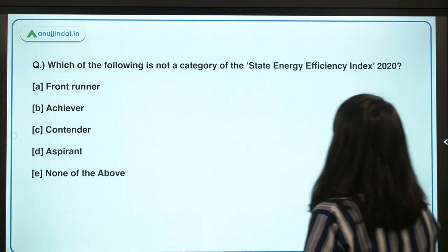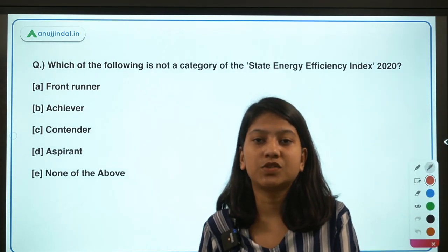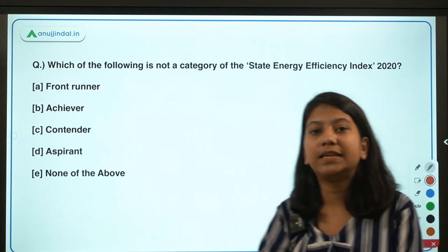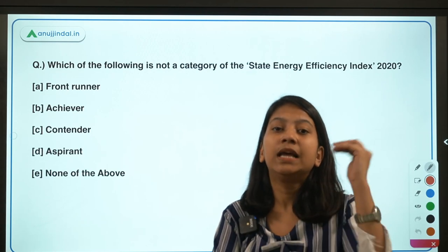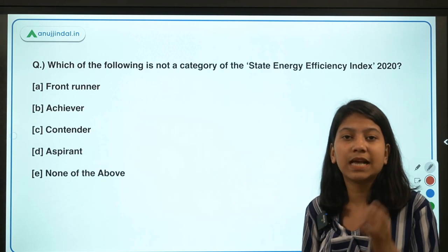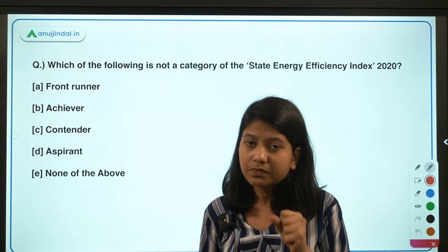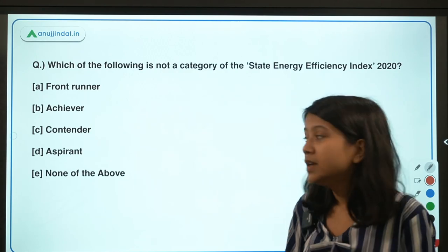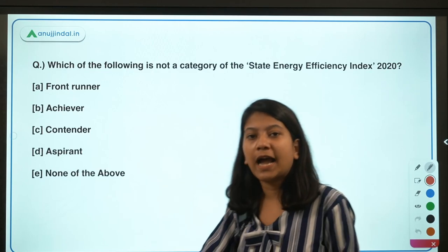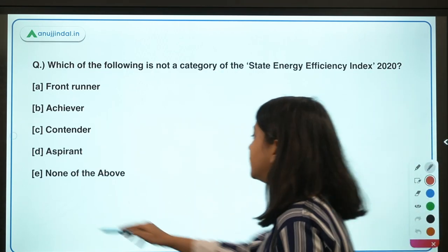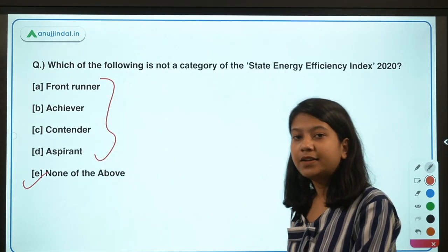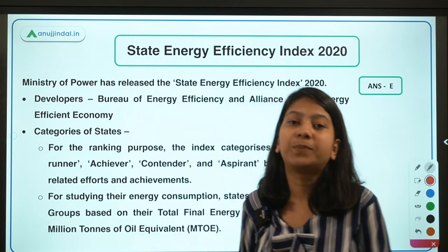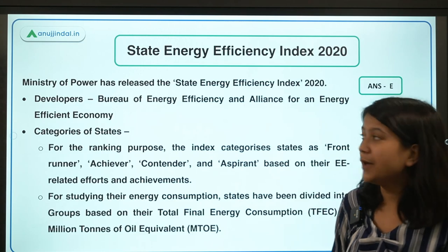The first question is about the State Energy Efficiency Index released by the Ministry of Power. Which is not a category of states in the State Energy Efficiency Index 2020? This index has divided the states into four categories for ranking purposes. The right answer is option E — none of the above — meaning all four options are categories of this index, which measures efficiency in using and obtaining energy from different sources.